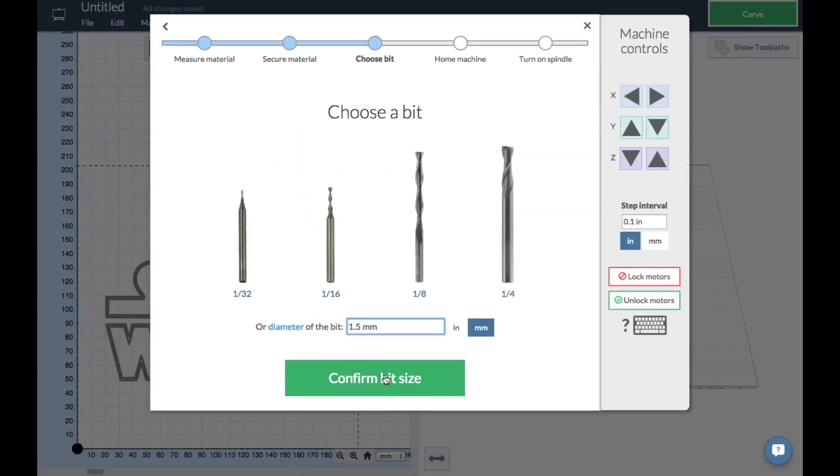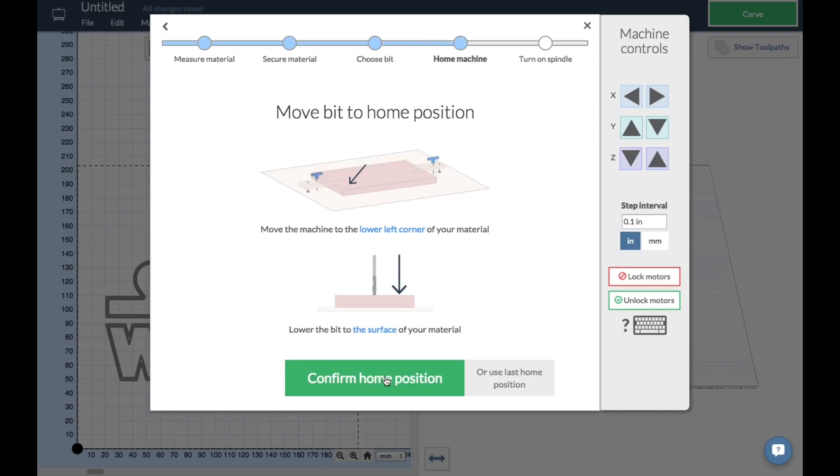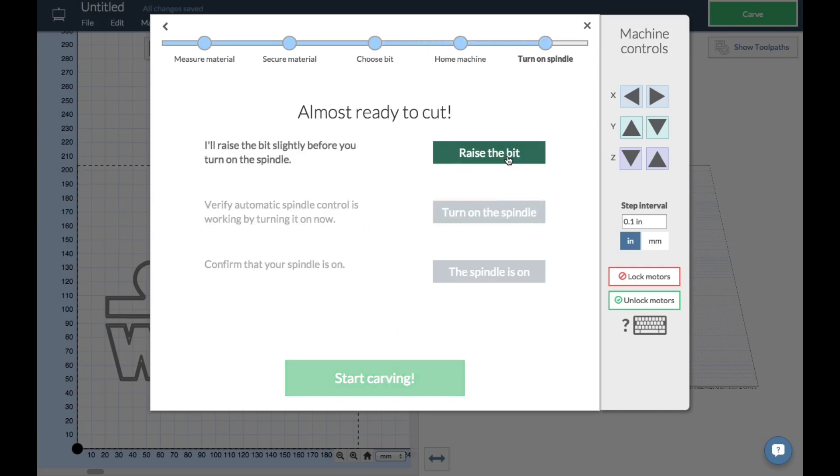I had it clamped down. I chose the bit. The bit was proper. I had already homed it, so I clicked on raise the bit, turn on the spindle. The spindle was spinning, so I let it start carving.